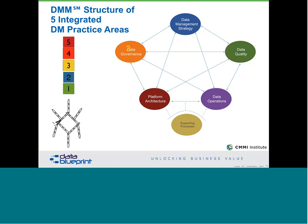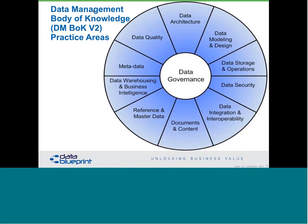Let's give a quick example. If I rate the four activities — quality, operations, platform architecture, and governance — at a three, but the data management strategy piece is only rated at a one because they haven't started yet, the foundation can only be as strong as the weakest link. Consequently, it won't do this organization any good to put more money into governance, quality, operations, or platform until they take that one up to a three. None of the rest of it is going to make sense. We do a whole webinar on just that topic.